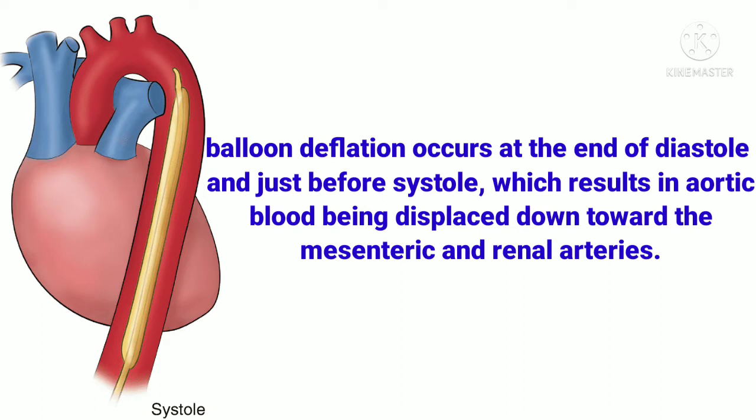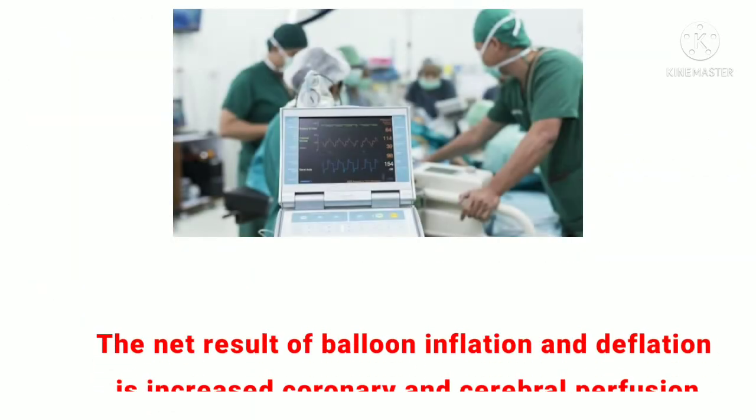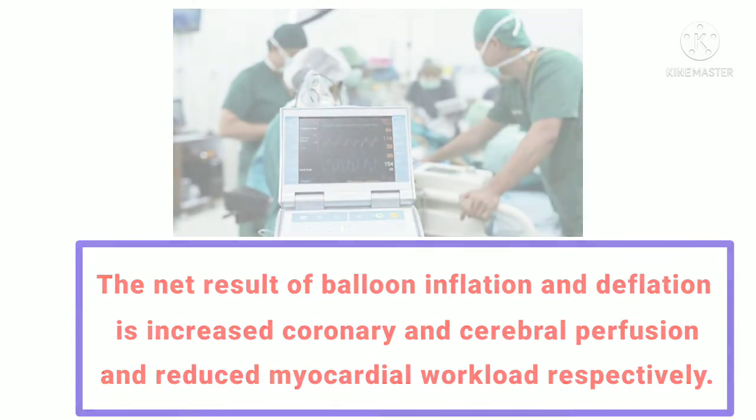Deflation results in aortic blood being displaced down towards the mesenteric and renal arteries, increasing perfusion to these organs and thus reducing the afterload. The net result of balloon inflation and deflation is increasing coronary and cerebral perfusion and reducing myocardial workload respectively.